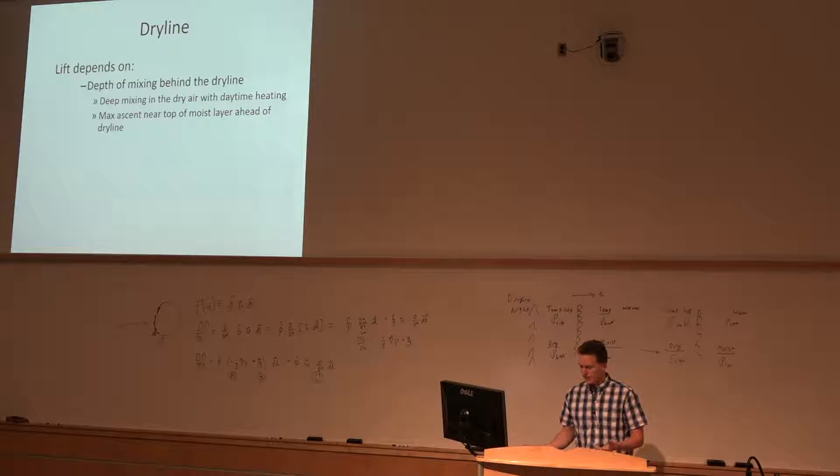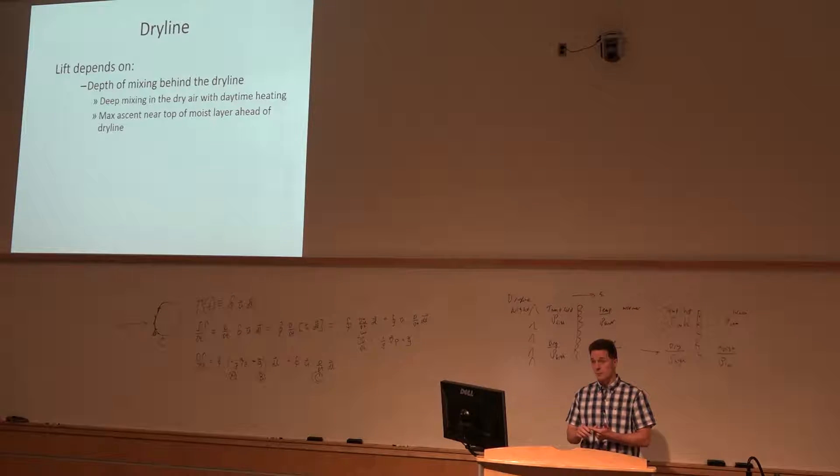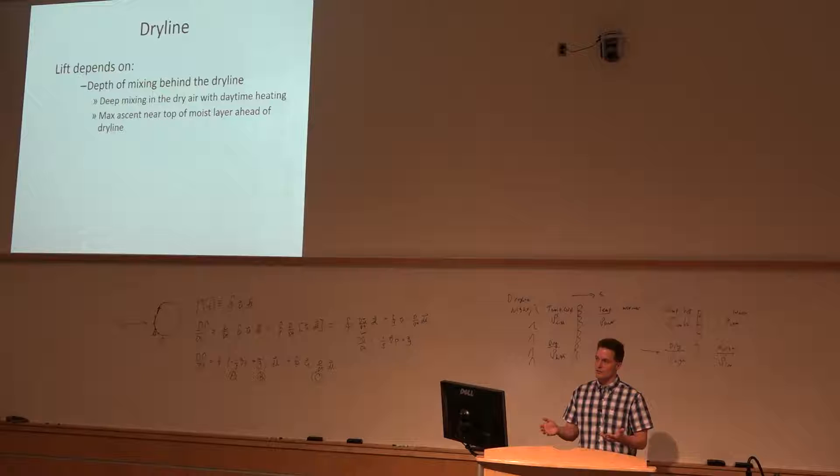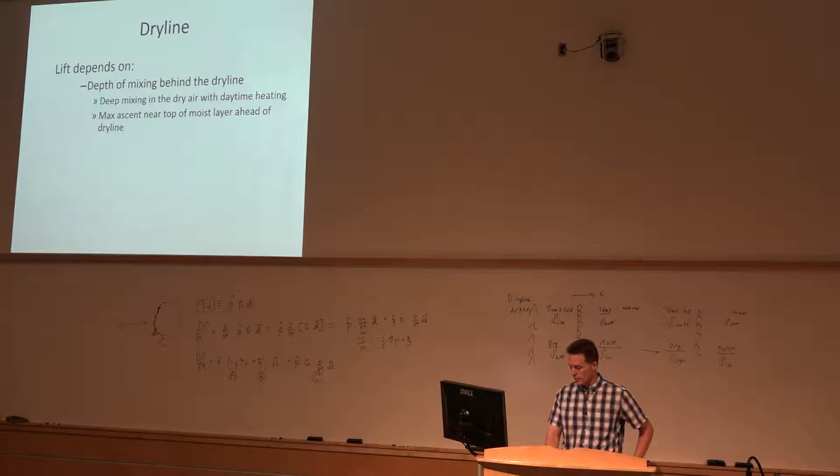Okay, the dry line itself, the lift depends on a couple of different factors. This is based on high resolution field project observations and proximity to the dry line. We start with the depth of the mixing on the dry side of the boundary and we're looking at the depth of the moist layer on the moist side of the boundary. So the circulation itself is largely confined to that layer which is the top of the moist layer on the moist side and the depth of the mixed layer on the dry side, and the maximum ascent tends to scale with the height of the moist layer on the moist and unstable side of the dry line.